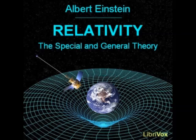If we ponder over the question as to how the universe, considered as a whole, is to be regarded, the first answer that suggests itself to us is surely this. As we regard space and time, the universe is infinite. There are stars everywhere, so that the density of matter, although very variable in detail, is nevertheless on the average everywhere the same. However far we might travel through space, we should find everywhere an attenuated swarm of fixed stars of approximately the same kind and density.